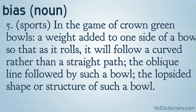Definition 5. Sports: in the game of crown green bowls, a weight added to one side of a bowl so that as it rolls, it will follow a curved rather than a straight path; the oblique line followed by such a bowl; the lopsided shape or structure of such a bowl.